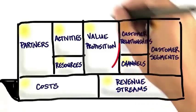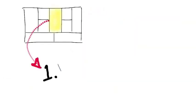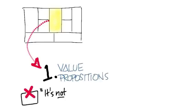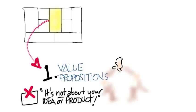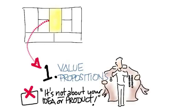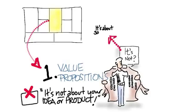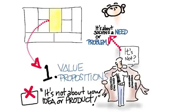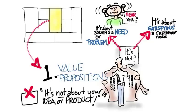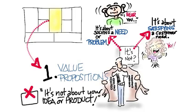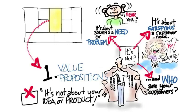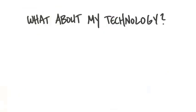Let's look at the first piece: the value proposition. The value proposition answers the question — what are you building and for who? It's not about your idea or product; it's about solving a problem or a need for a customer. What pain are you solving, what gain are you creating, and who are your customers? Value proposition is a fancy word for what product or service you're building. This is where you'd normally list features, speeds, and benefits — but you're going to be asking a different question. It's not all about your technology; technology is just part of the value proposition.